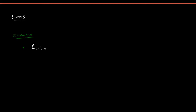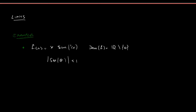Let's say we have the function f(x) = x·sin(1/x). We know, because we have 1/x here, that the domain of f will be the set of real numbers except 0. We also know that sin(θ) is always between -1 and 1, so the absolute value of sin(θ) is less than or equal to 1, and this is valid for all θ in the real numbers.